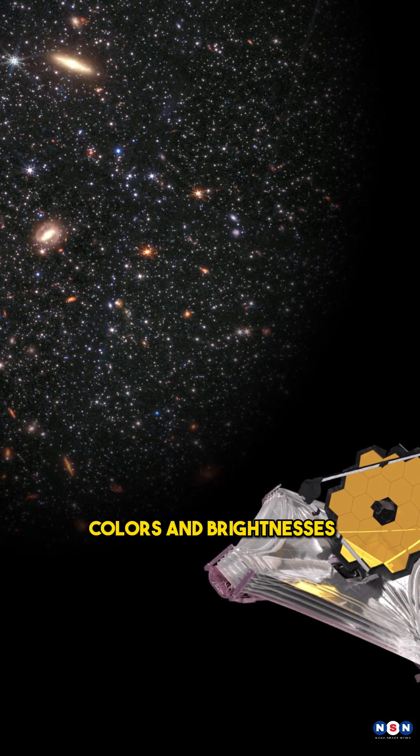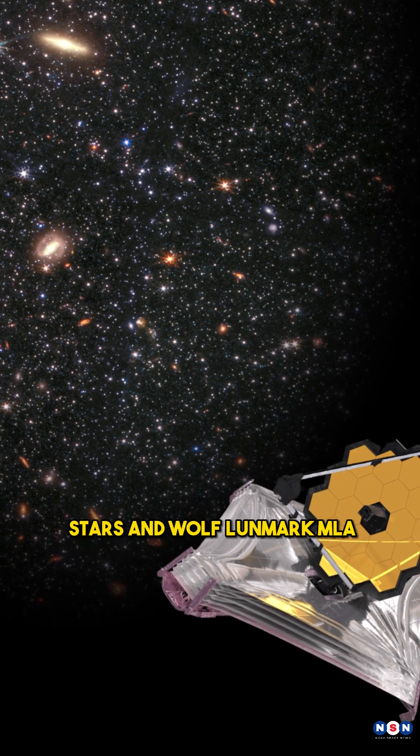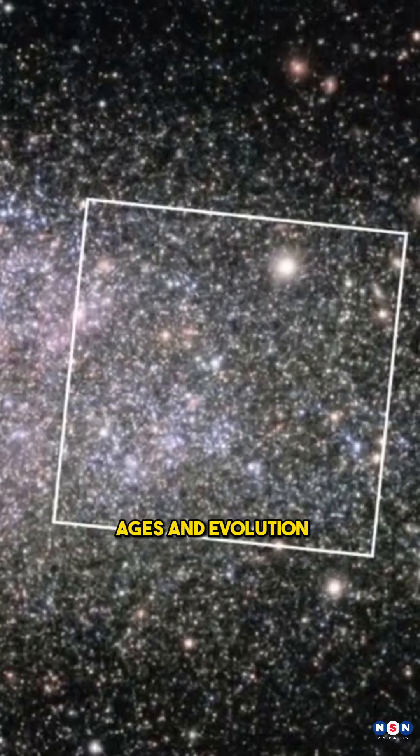James Webb measured the colors and brightnesses of hundreds of thousands of stars in Wolf-Lundmark-Melotte, which tell us their ages and evolution.